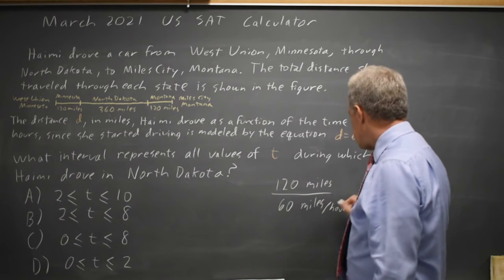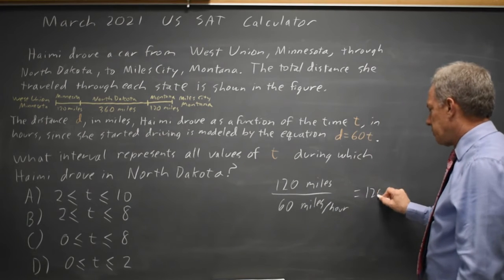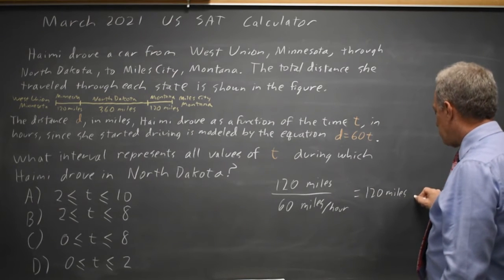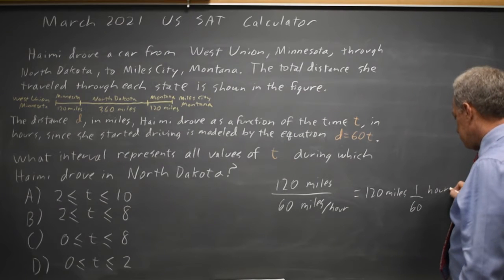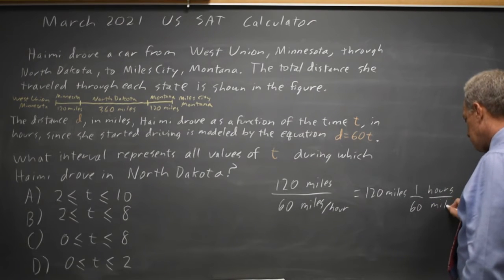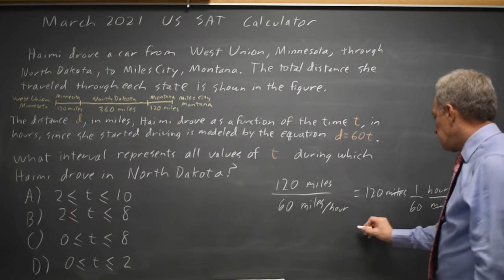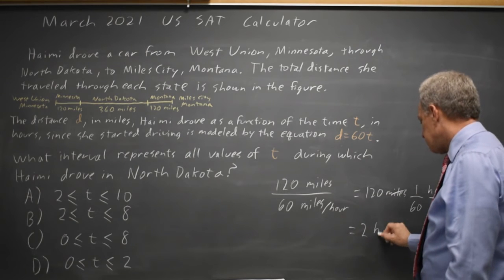is the same as 120 miles times 1 over 60 hours per mile. The miles cancel, leaving us with 120 over 60 is 2 hours.